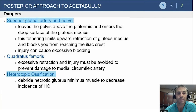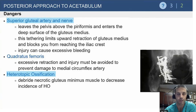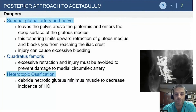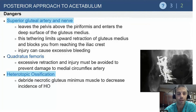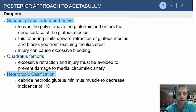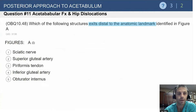The gluteus minimus is often injured in these fractures - you should debride and clean this up, as it is a potential source of heterotopic ossification (HO). Minimizing this tissue won't affect hip stability since the muscle is already torn, but it will help reduce HO risk, especially in young patients. The image shows an example of bridging HO where the hip is essentially fused and covered in bone hardware - that patient is not going to be happy.